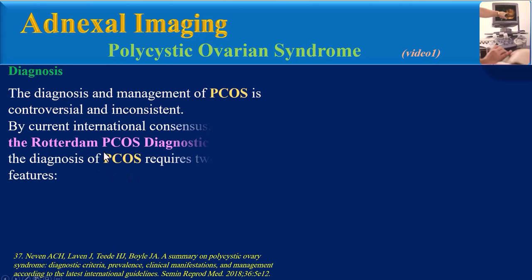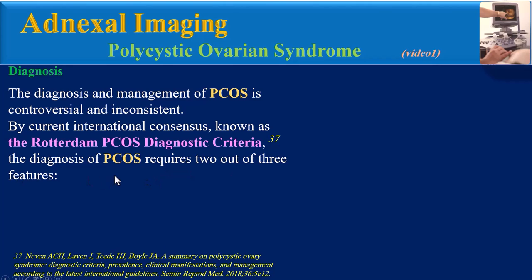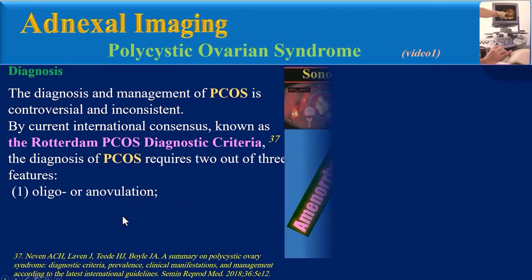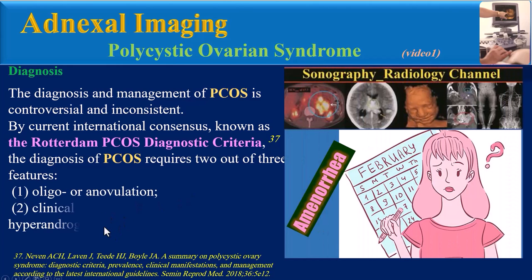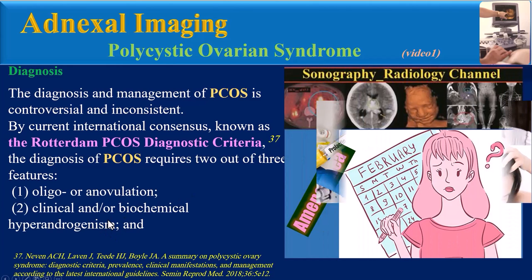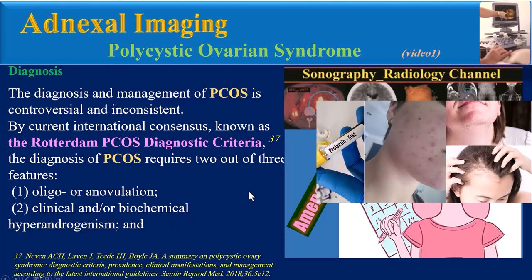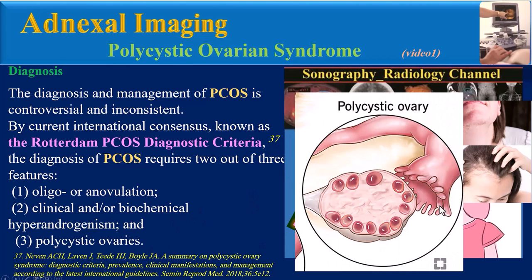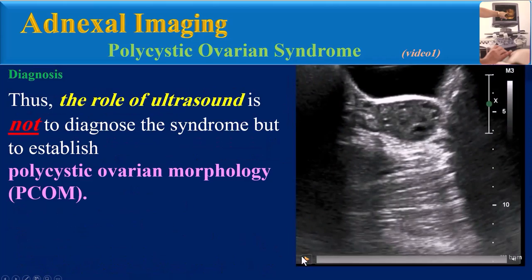Diagnosis: The diagnosis and management of PCOS is controversial and inconsistent. By current international consensus known as the Rotterdam PCOS diagnostic criteria, the diagnosis of PCOS requires two of three features: oligo- or anovulation, clinical and/or biochemical hyperandrogenism, and polycystic ovaries.